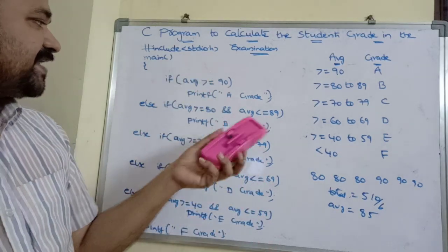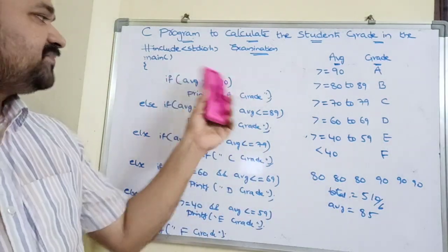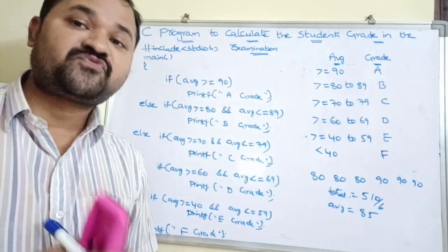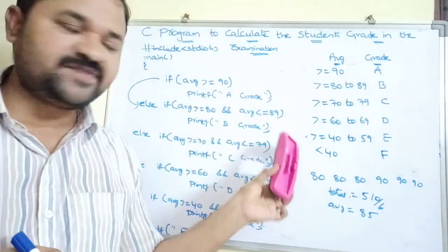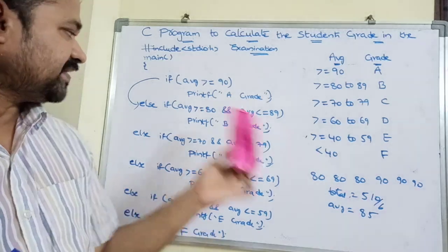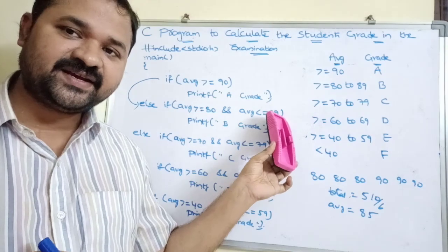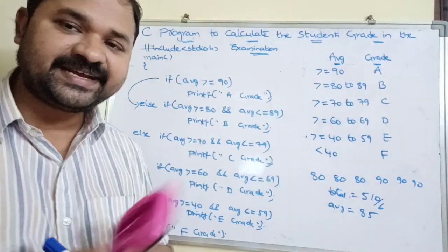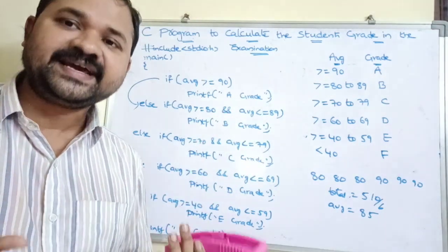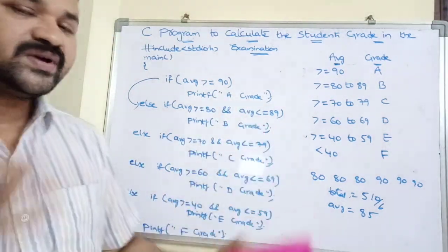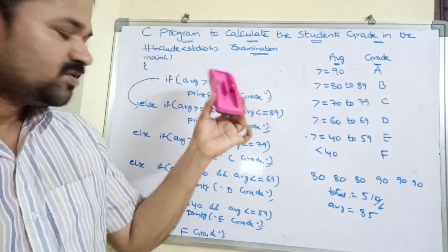The first condition checks if average >= 90. Average is 85, so 85 >= 90 is false. Control moves to the next condition: 85 >= 80 is true, and 85 <= 89 is true. Both conditions are true, and using logical AND, the entire expression is true, so the grade B message is printed. This is how we calculate student grade using an else-if ladder.